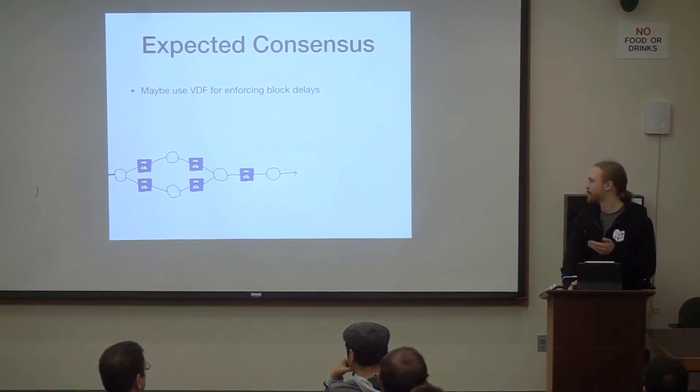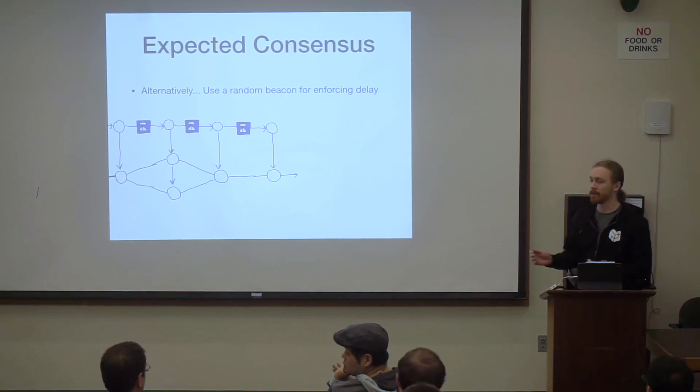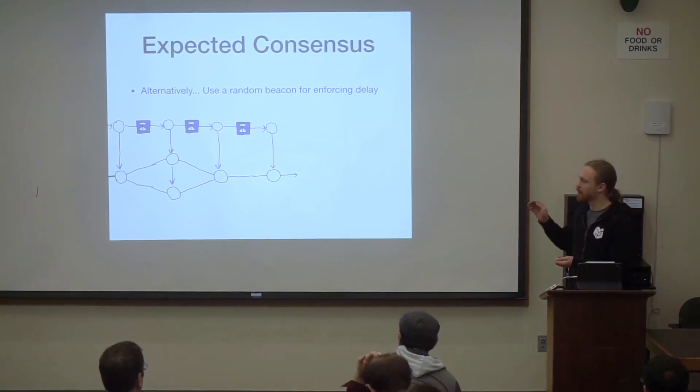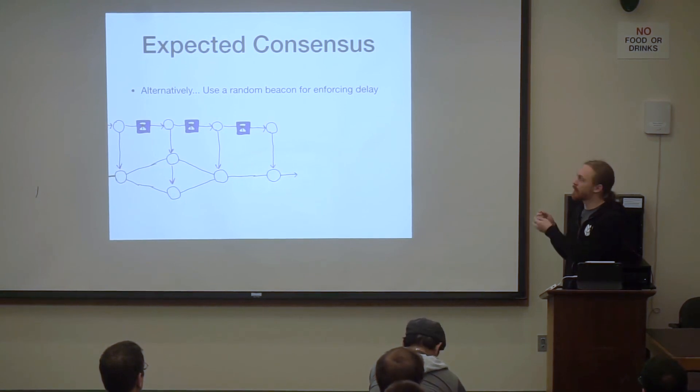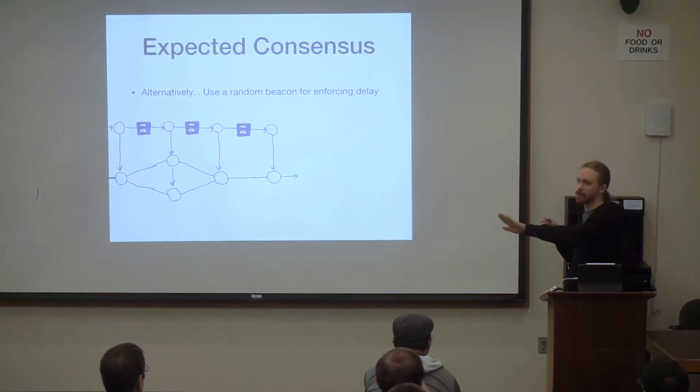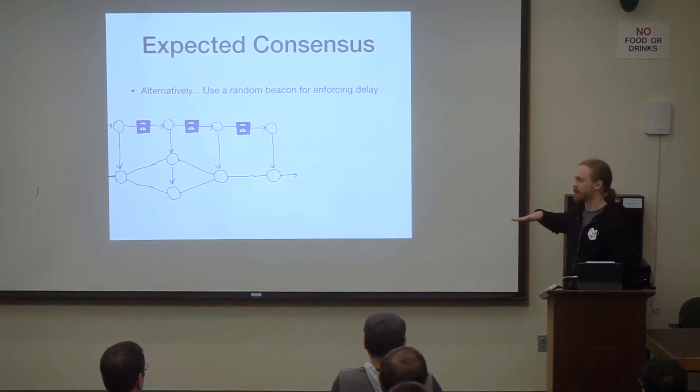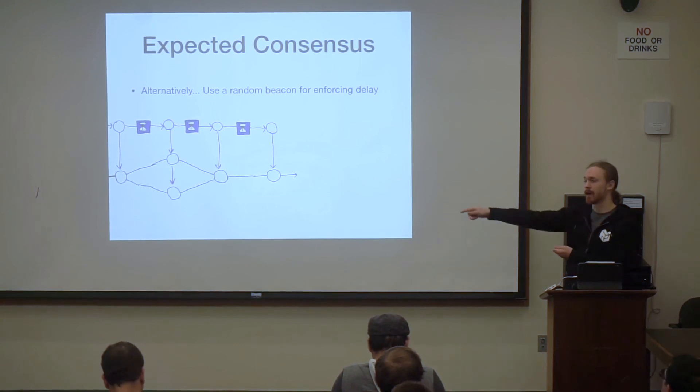And so instead of running a VDF between each of these, we could also use a random beacon. The random beacon means that you can look. So depending on how you construct it, the random beacon has this similar problem where you could collect all these things into the past. And since all the randomness is now known in the past, you could reconstruct a chain depending on your algorithm. Depending on how you allow people to do this, you could reconstruct the chain from the past. And so if you enforce the VDF between each block, then you wouldn't be able to easily go back and just recompute an entirely new chain because you need randomness.